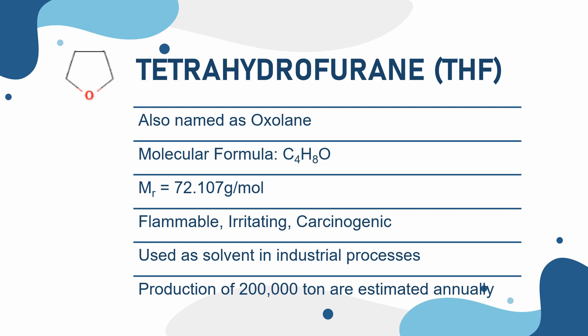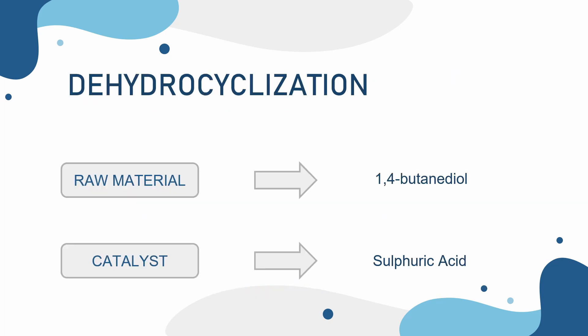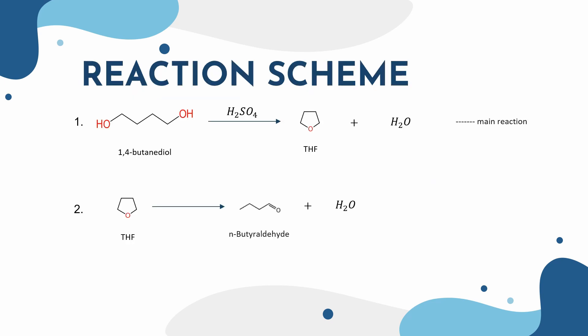About 200,000 tons of THF are produced annually. The industrial process used to produce THF is dehydrocyclization of 1,4-butanediol with sulfuric acid as catalyst. There are two reactions happening in the process. The first reaction, in which THF is formed from 1,4-butanediol, is the main reaction. THF will also produce byproduct N-butyraldehyde in the process.